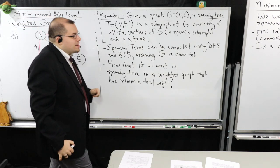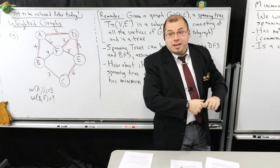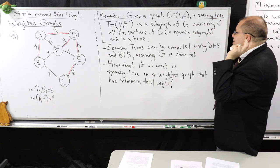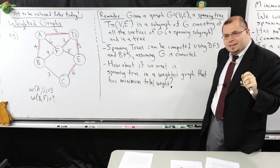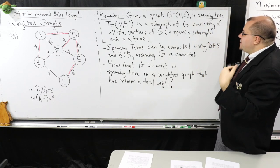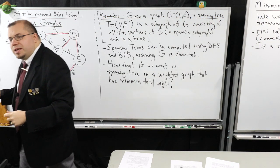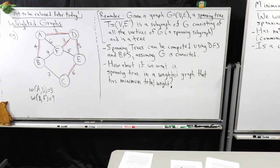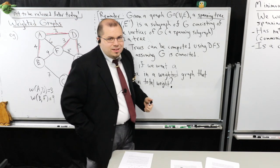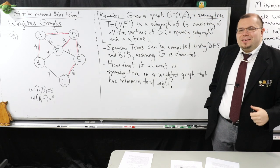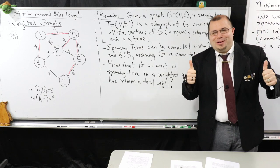So we're going to be interested in computing these types of spanning trees. I'm going to give you some connected graph, and I would like to compute a spanning tree that has minimum cost or minimum weight, where the weight or cost of a tree is simply the sum of all the edge weights for all of its edges.